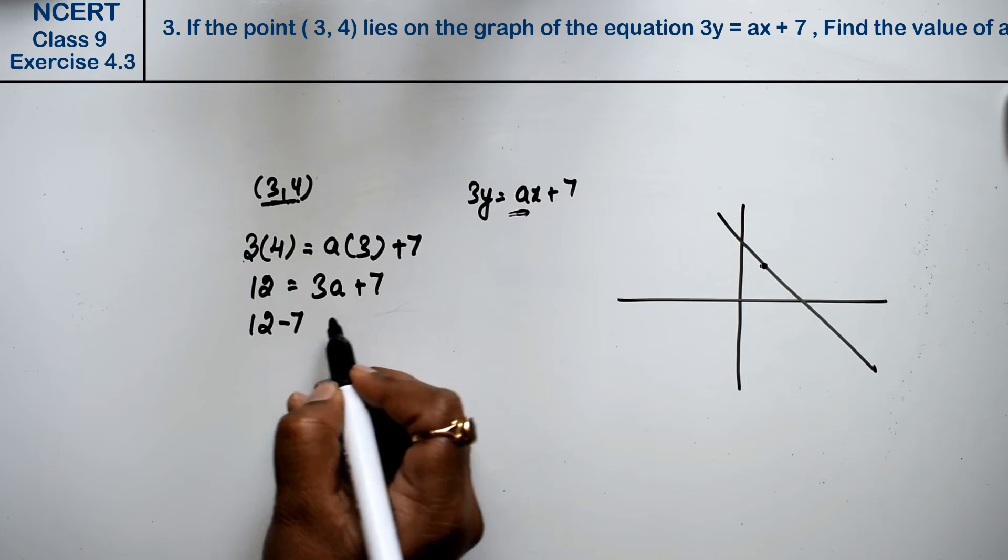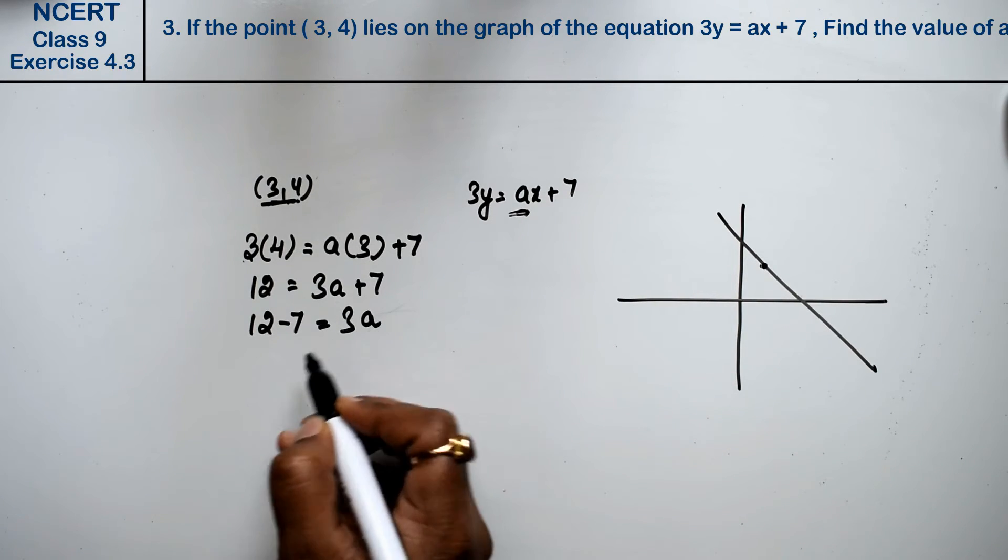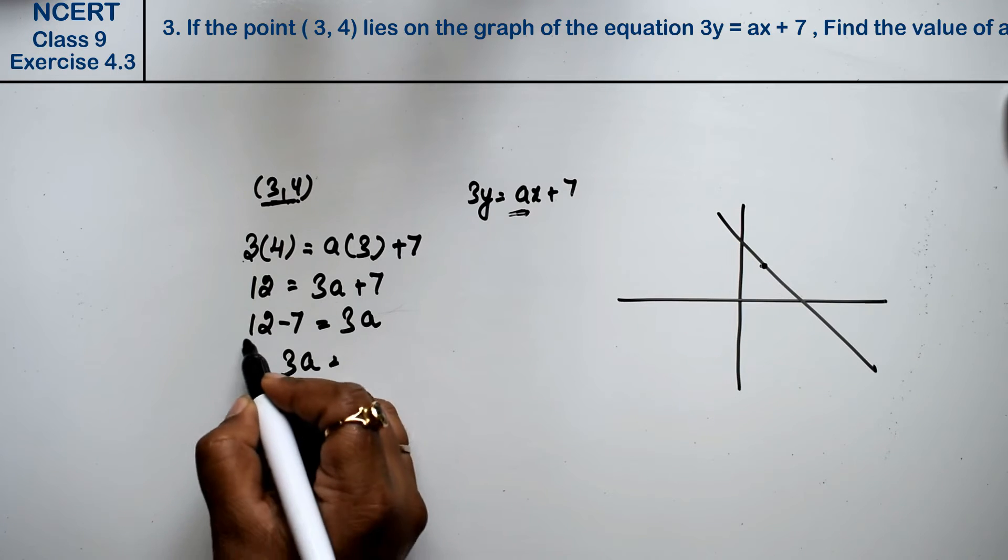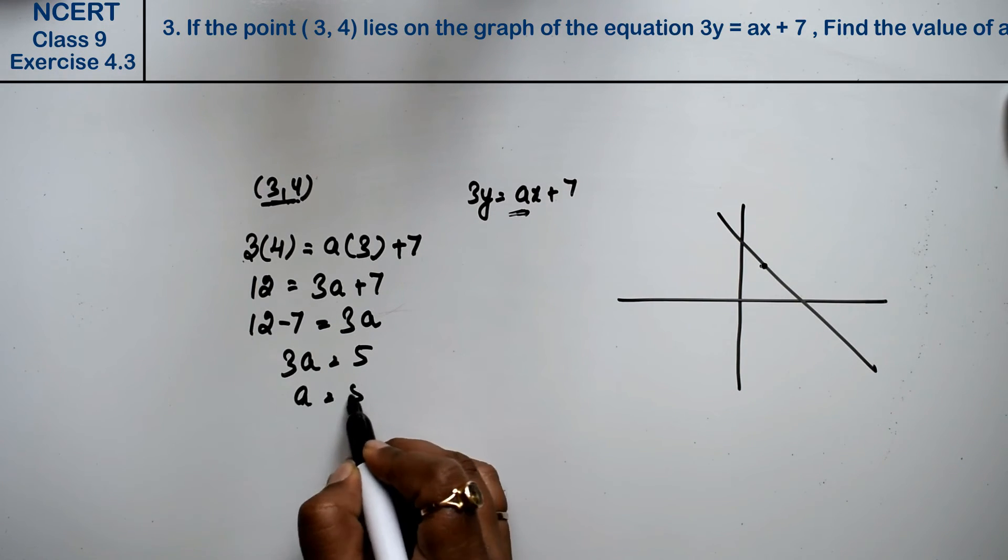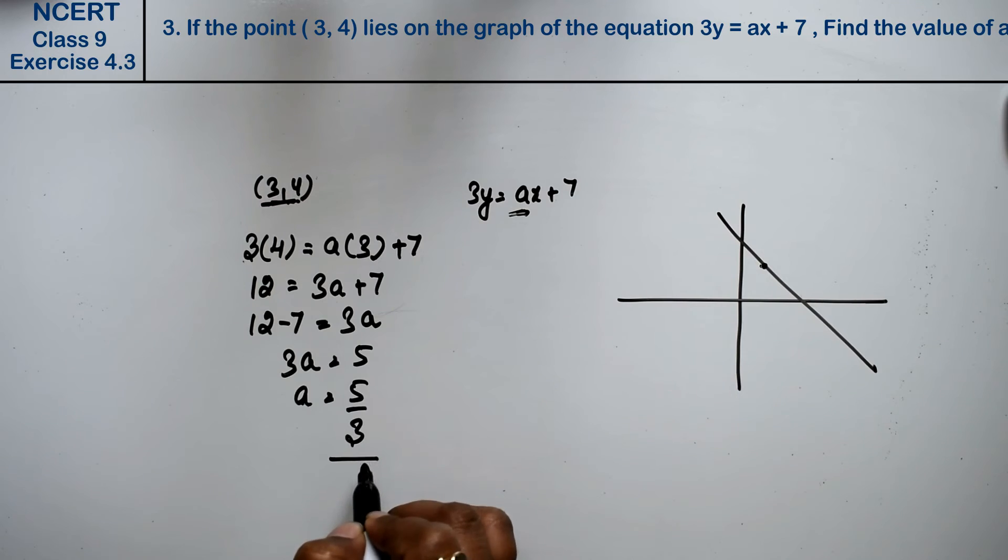7 will come here. 12 minus 7 equals to 3a. How much is the value of a? From 12, 7 is 5. How much is the value of a? 5 upon 3 is the answer.